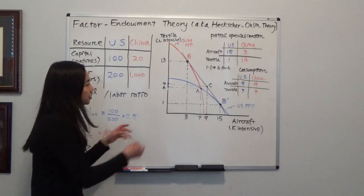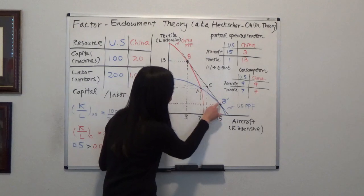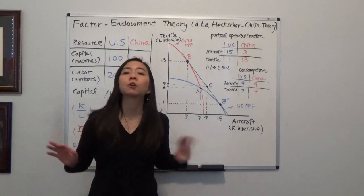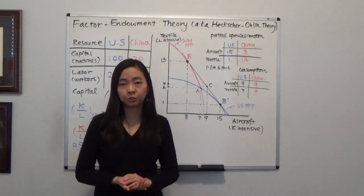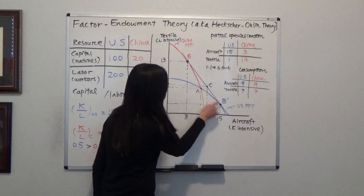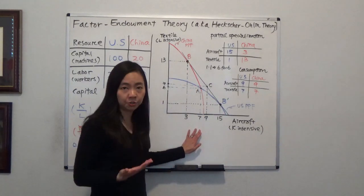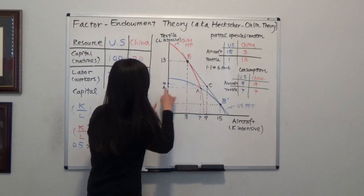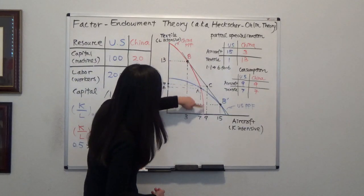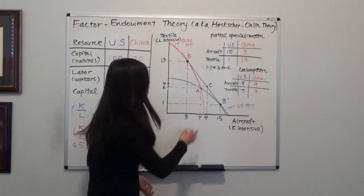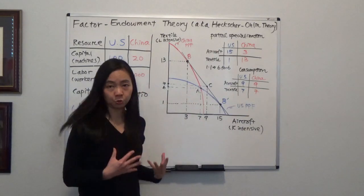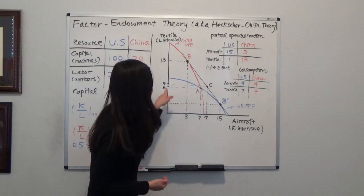Since the U.S. is capital abundant, their production possibility curve looks like this blue line, and China's production possibility frontier is the red line. Before trade begins, the U.S. and China must both consume whatever they produce. Suppose the U.S. chooses point A on the blue curve, producing and consuming seven units of aircraft and six units of textile. China has similar tastes and also chooses point A on their red production possibility curve, also producing and consuming seven units of aircraft and six units of textile.